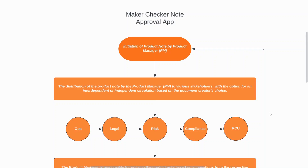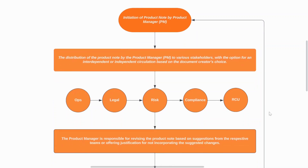I'll quickly set the context using this flowchart. The first step in a node approval is the initiation of a product node by the product manager. As a product manager, crafting and revising product nodes is more than just a task — it's a strategic process requiring precision, collaboration, reviews, approvals, rework, and more. Once the node has been initiated, the product manager distributes it to various stakeholders, with an option for interdependent or independent circulation.